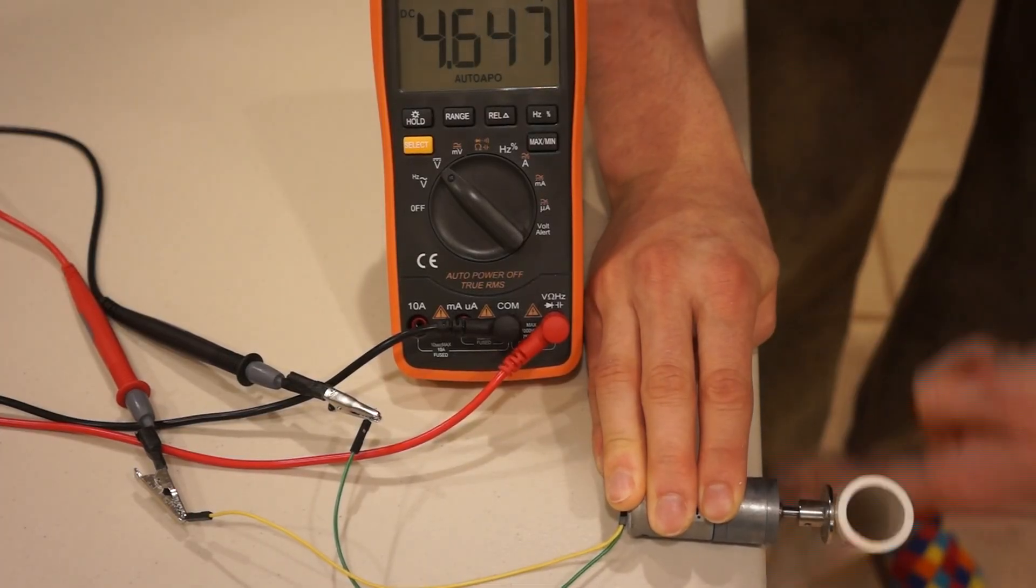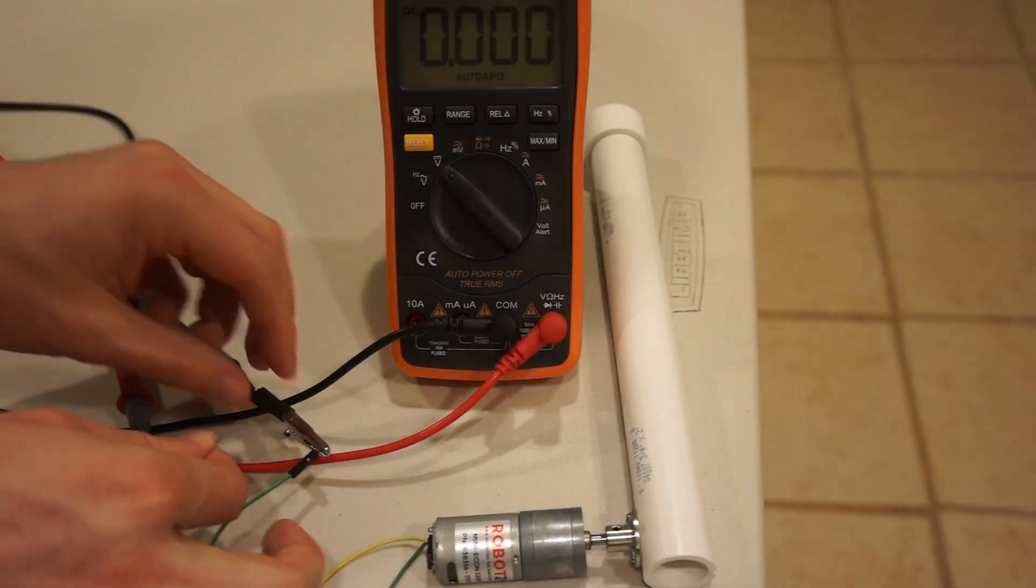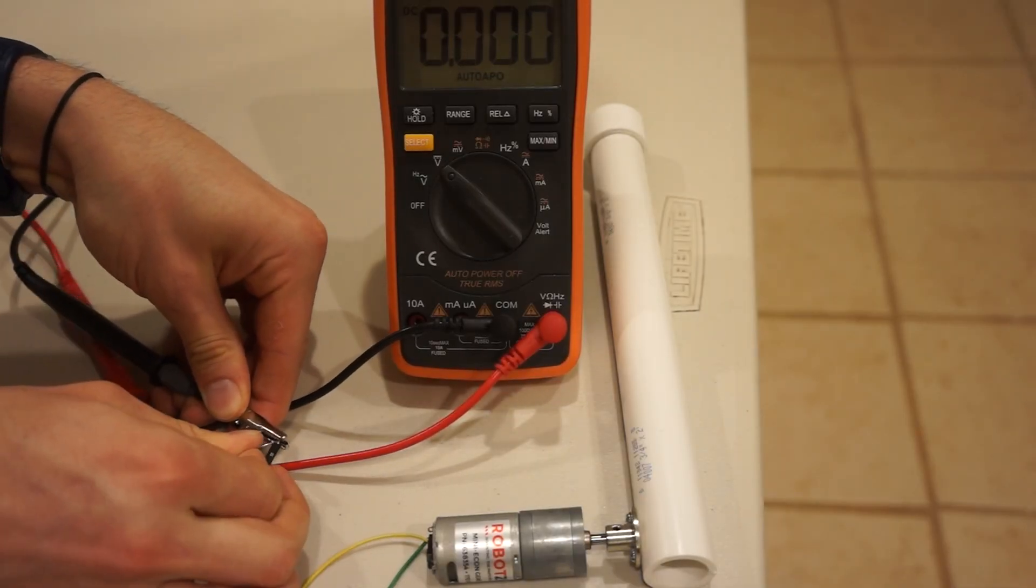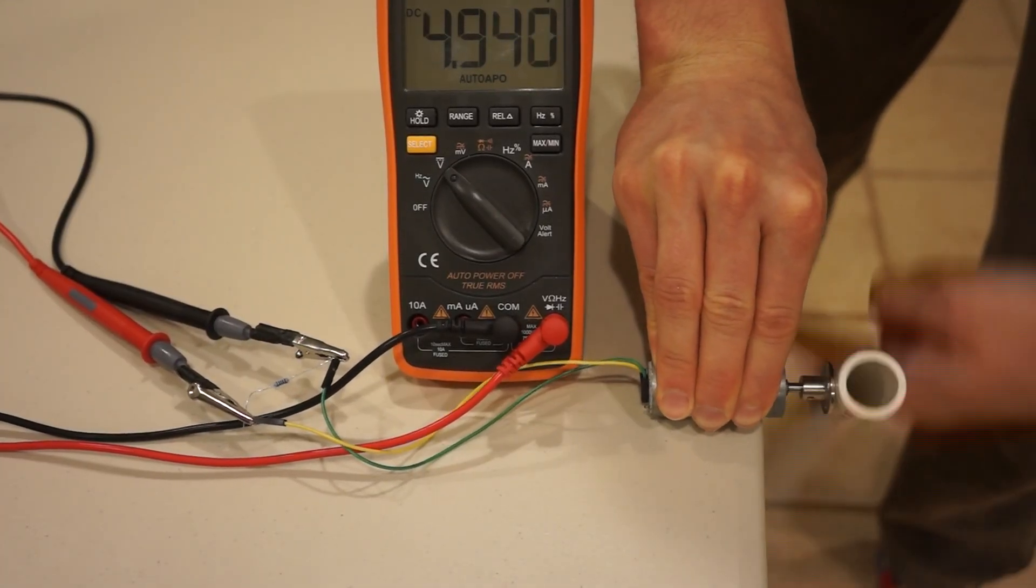A phone will charge acceptably at 300 milliamps. So to simulate that, I'll attach a 15 ohm resistor. The cranking is more difficult, but I'm still able to achieve sufficient voltage.